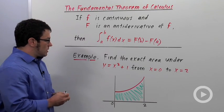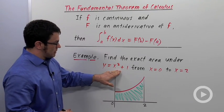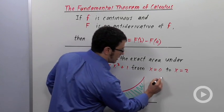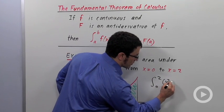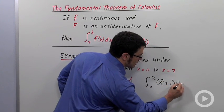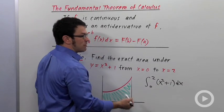The exact area equals the definite integral of this function from 0 to 2. That would be the integral from 0 to 2 of x squared plus 1 dx. So this is the integral I'm going to solve.